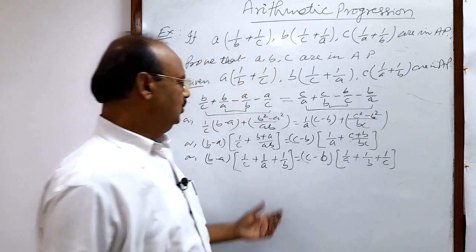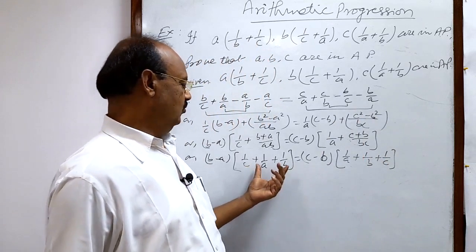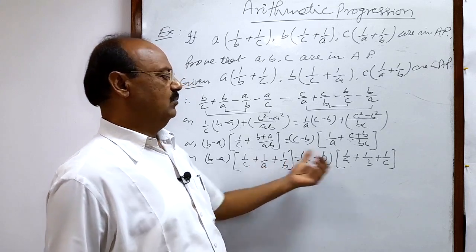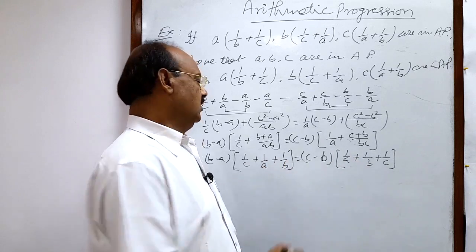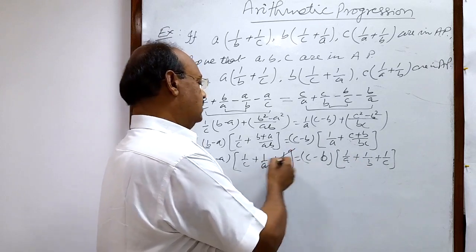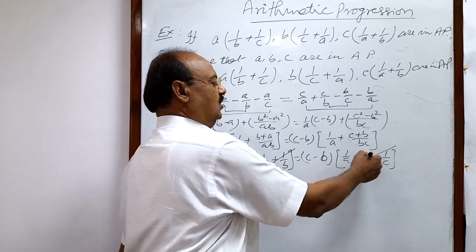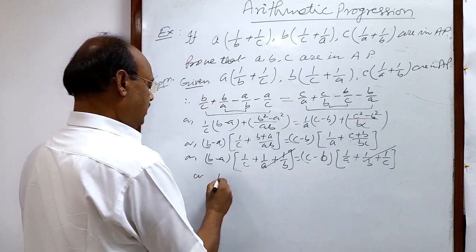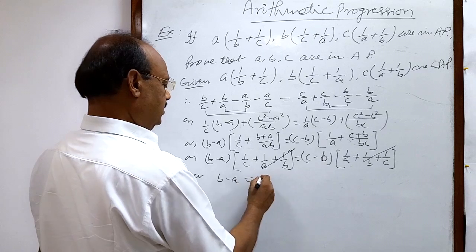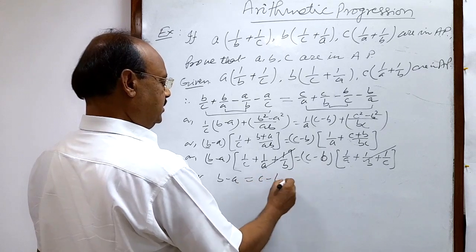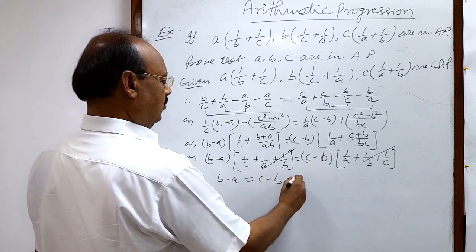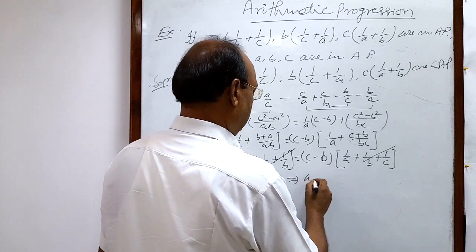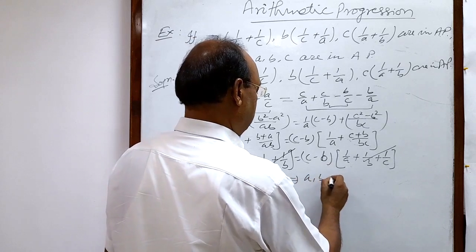Now both sides have the factor (1/a + 1/b + 1/c), so we can cancel it from both sides. We are left with b - a = c - b, which proves that the common difference is equal.